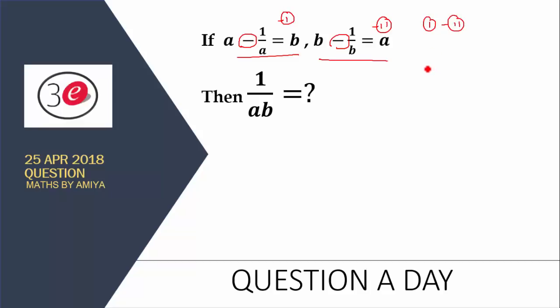So I am writing equation 1 as like this: a minus b equals 1/a, and this one is b minus a equals 1/b. I am subtracting equation 1 from equation 2.